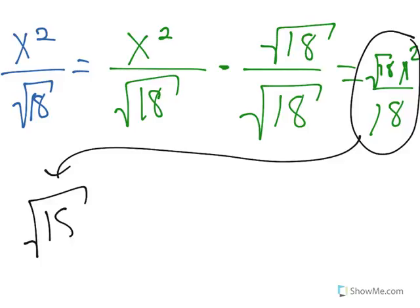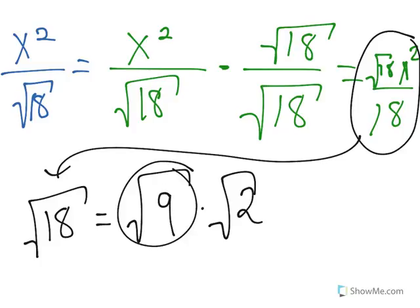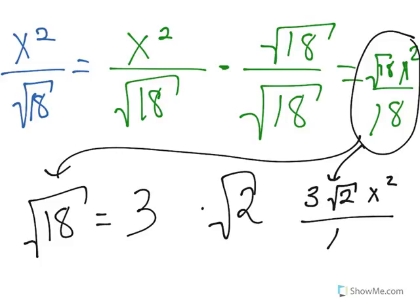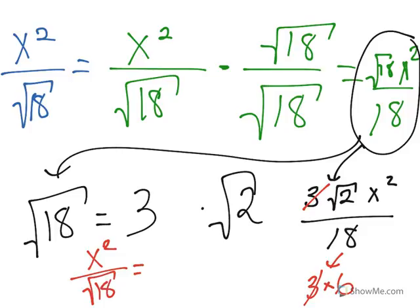The square root of 18 is actually square root of 9 times square root of 2. We know the square root of 9 is 3, so square root of 18 equals 3 times square root of 2. We can rewrite the expression as 3 times square root of 2 times x squared over 18. Now we can cancel the 3 — since 18 is 3 times 6 — and our result is that x squared over square root of 18 equals square root of 2 times x squared over 6.